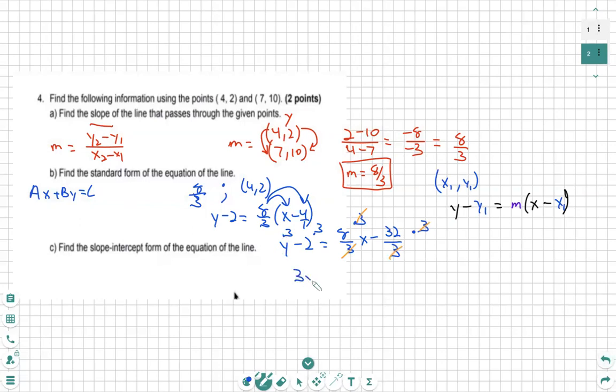So we have 3y minus 6 equals 8x minus 32. We're going to move our 8x over. We're going to get negative 8x minus 3y minus 6 equals negative 32. Add your 6 over. Negative 8x minus 3y.